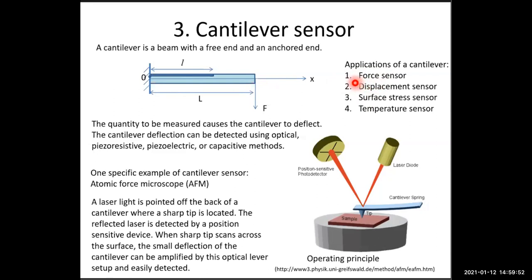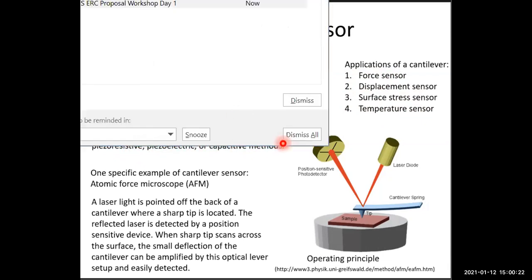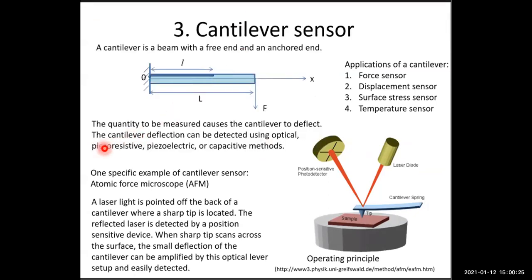The quantity to be measured — for example, force — causes the cantilever to deflect. The cantilever deflection can then be detected using optical, piezo-resistive, piezoelectric, or capacitive methods.